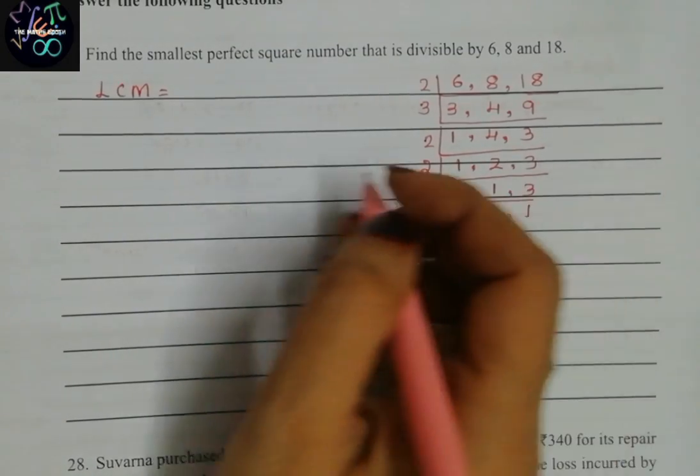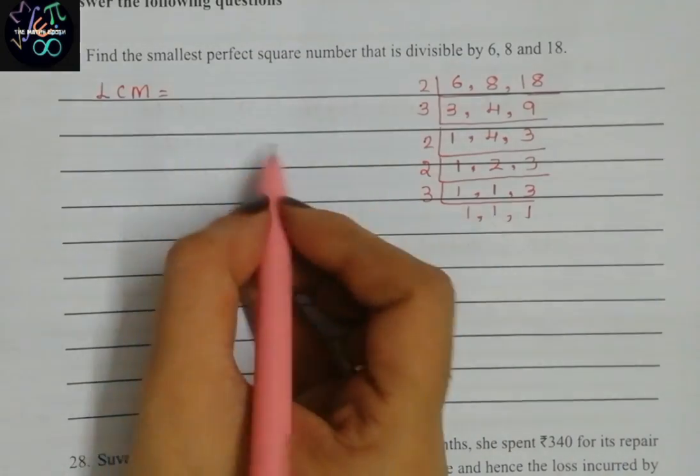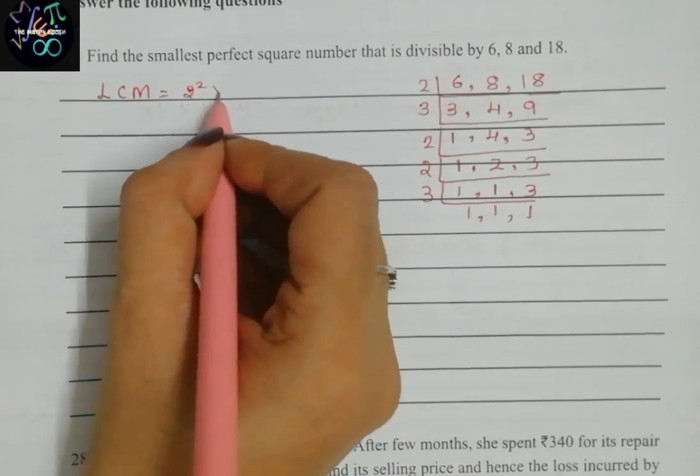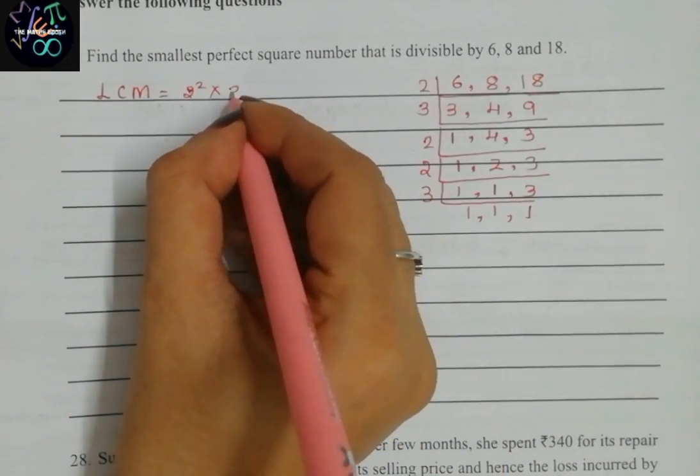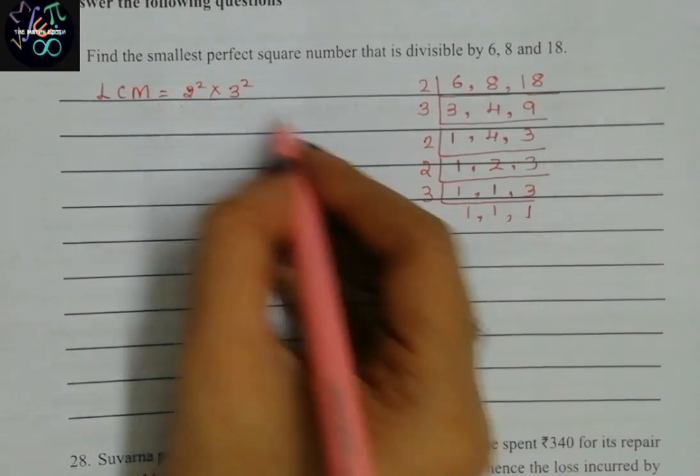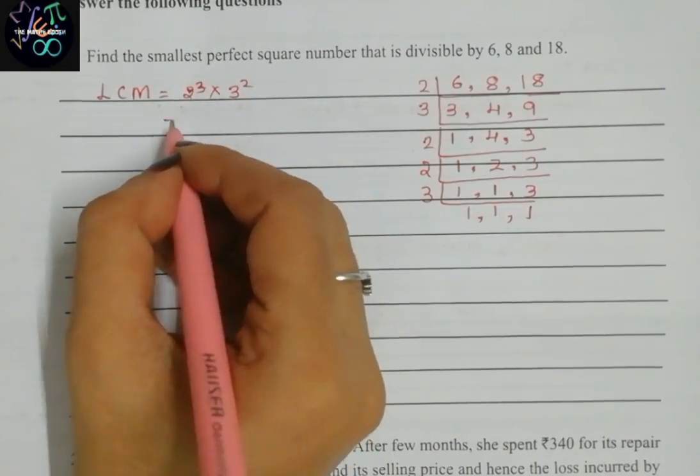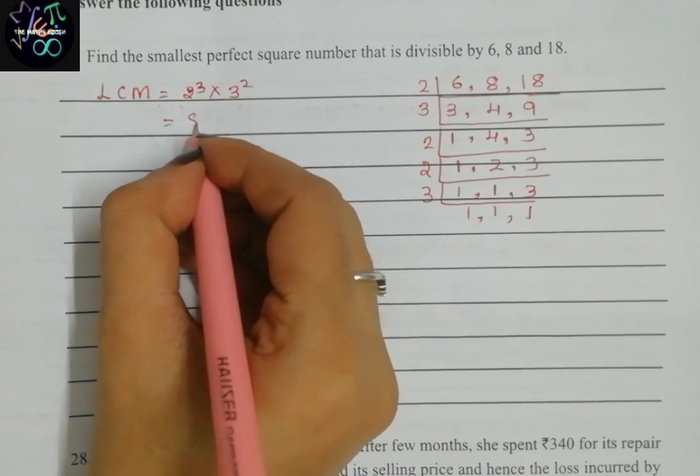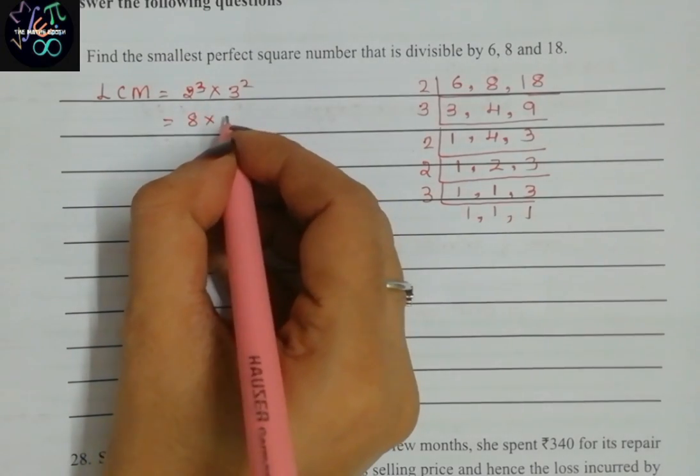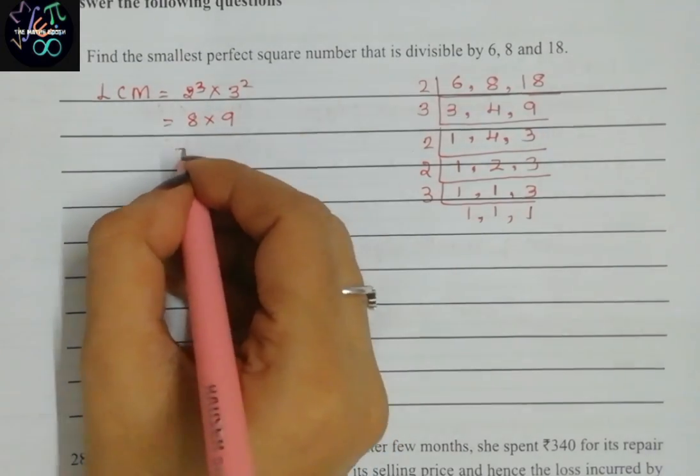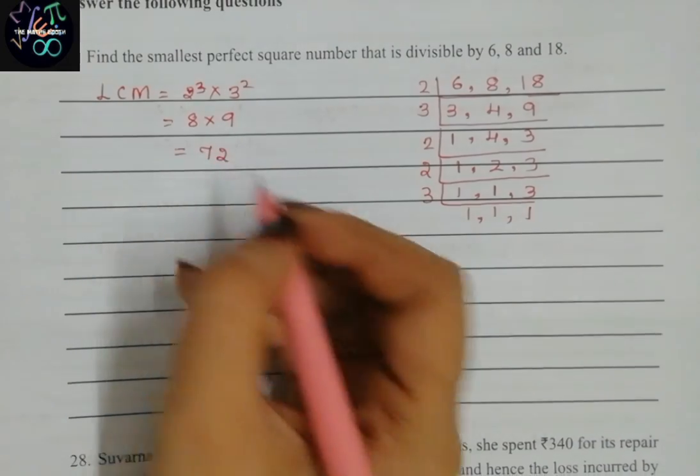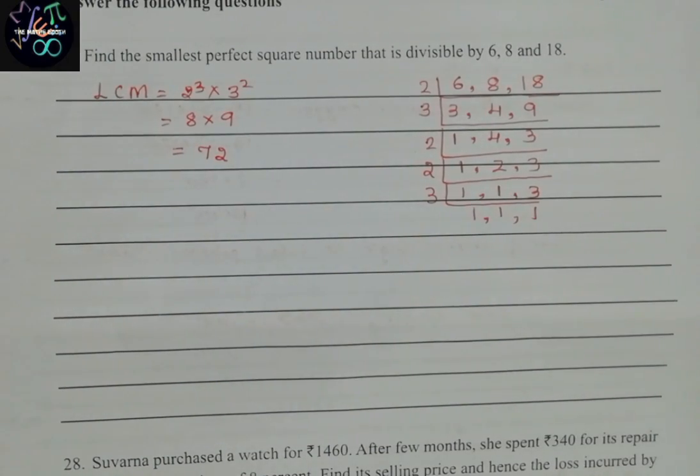The LCM what we got is 2 squared, 3 squared, and 2 cubed. 2 twos are 4, 4 twos are 8, and 3 squared is 3 threes are 9. 9 eights are 72. We got LCM as 72.